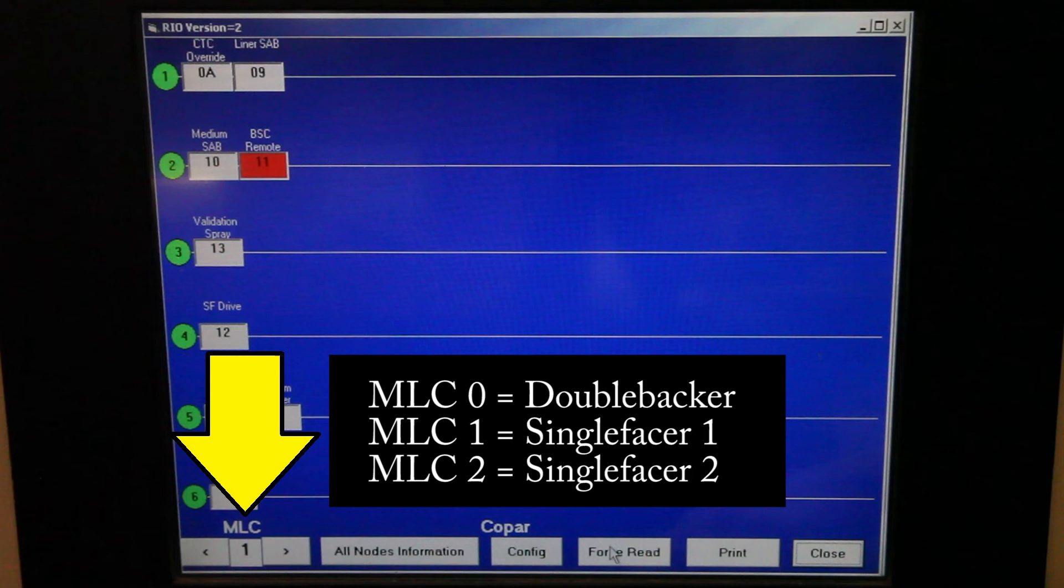The MLC number on the lower left corner indicates which machine we are looking at. Press the right or left arrow to change the MLC number. MLC 0 is a double backer, MLC 1 is a single facer 1, MLC 2 is a single facer 2, and so on.